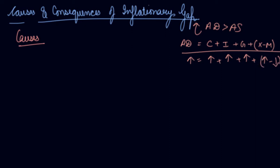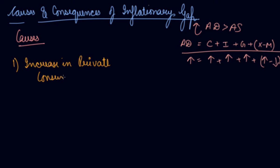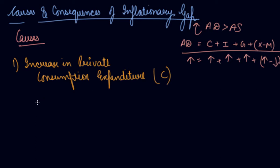So these are the causes of your inflationary gap. Number one is increase in private consumption expenditure — that is your C. If you increase your private consumption expenditure, which means you are demanding more in the economy, you are demanding more, which increases your aggregate demand.